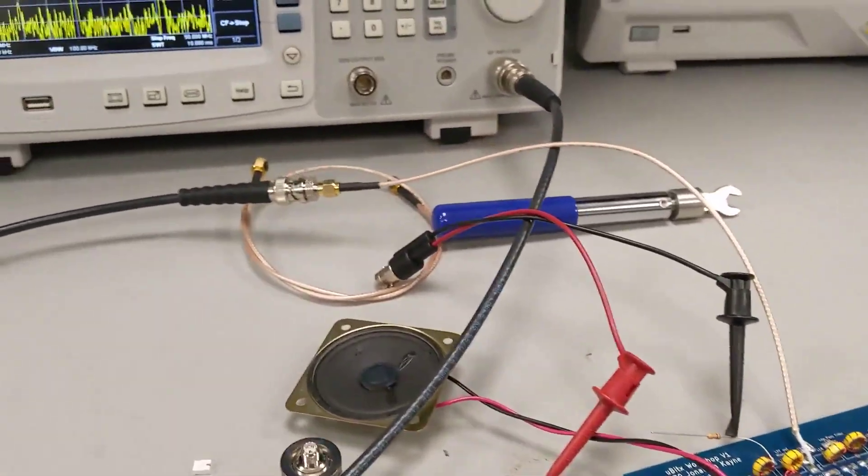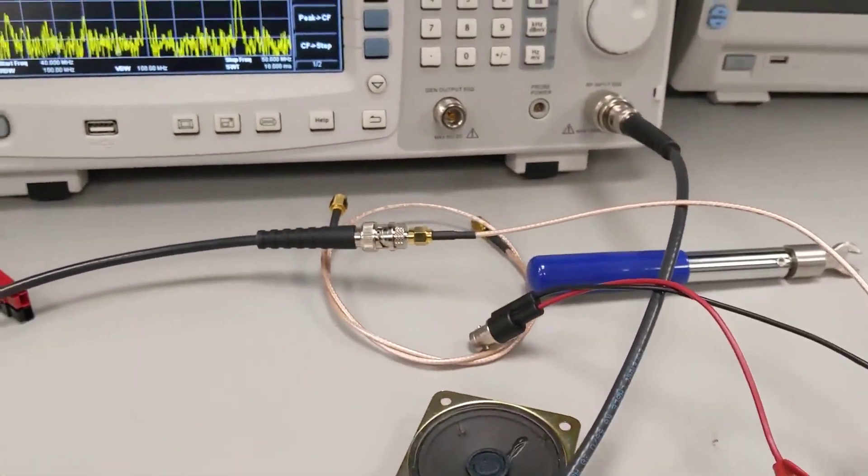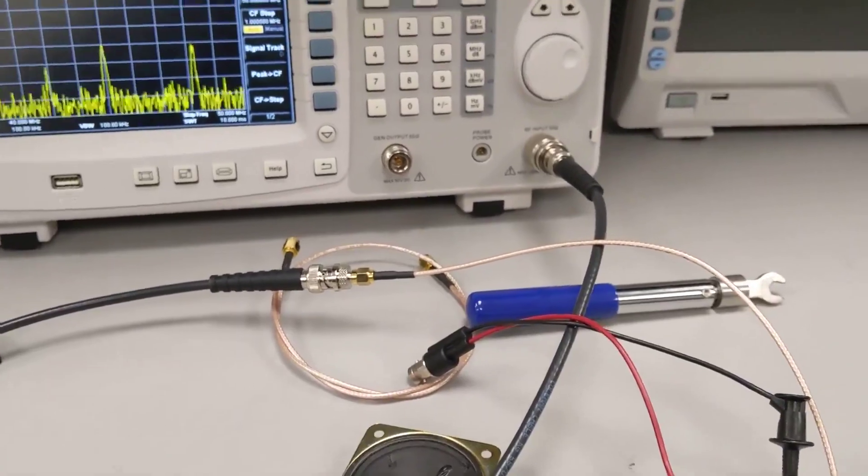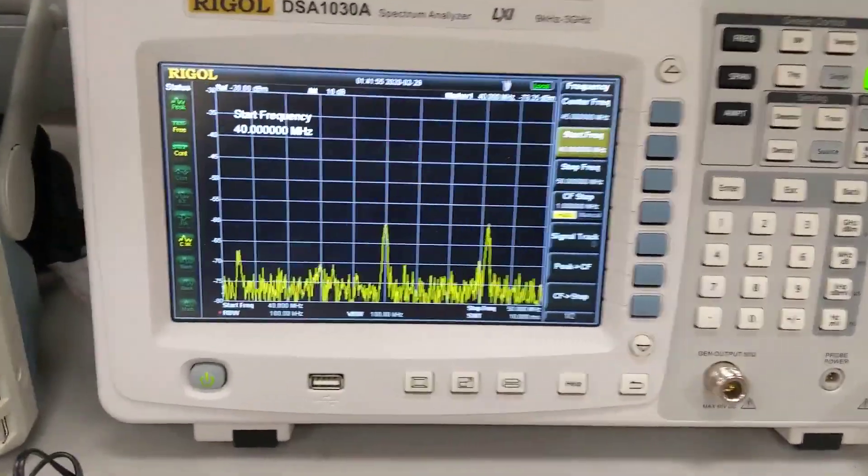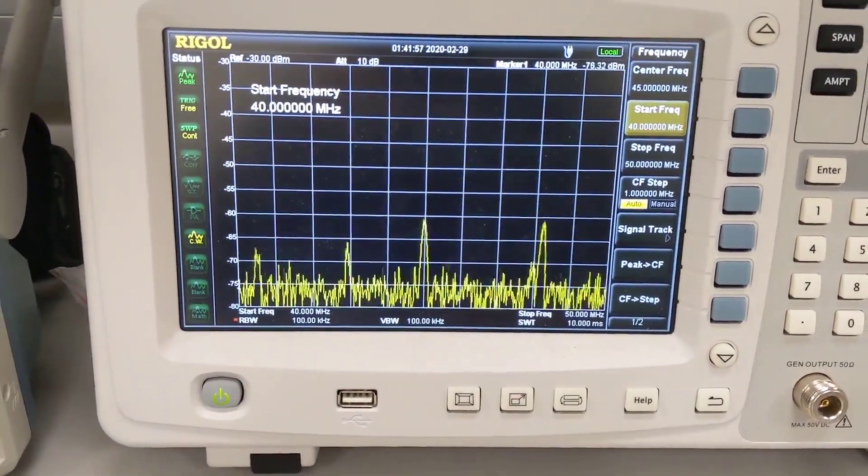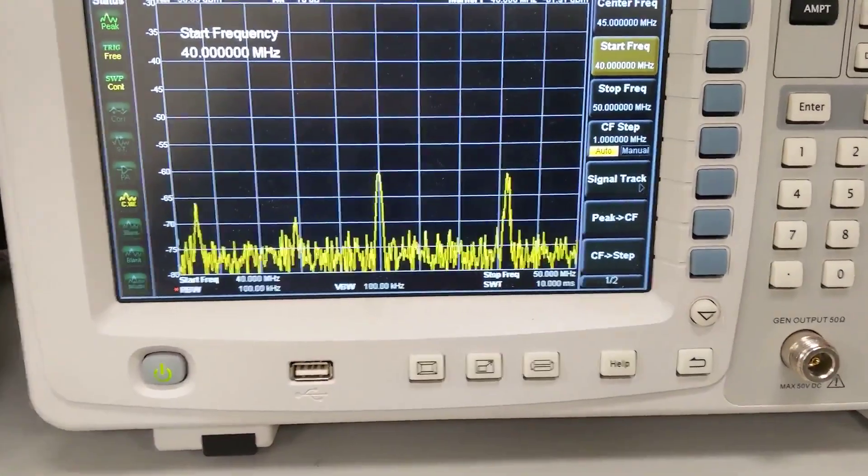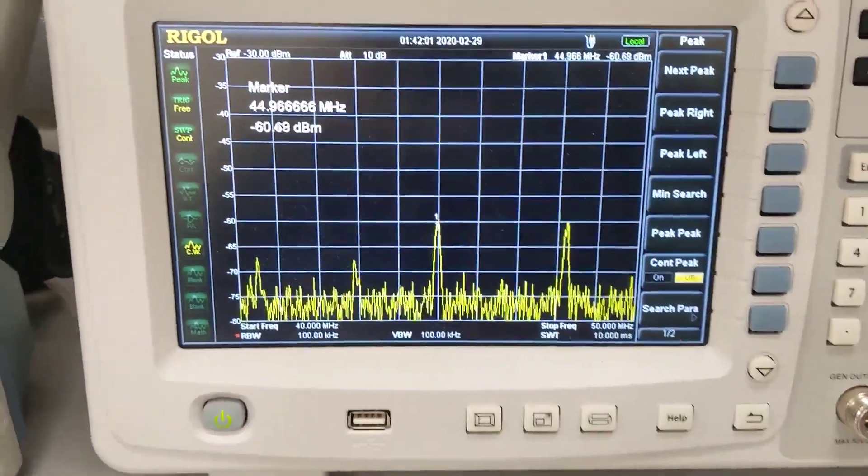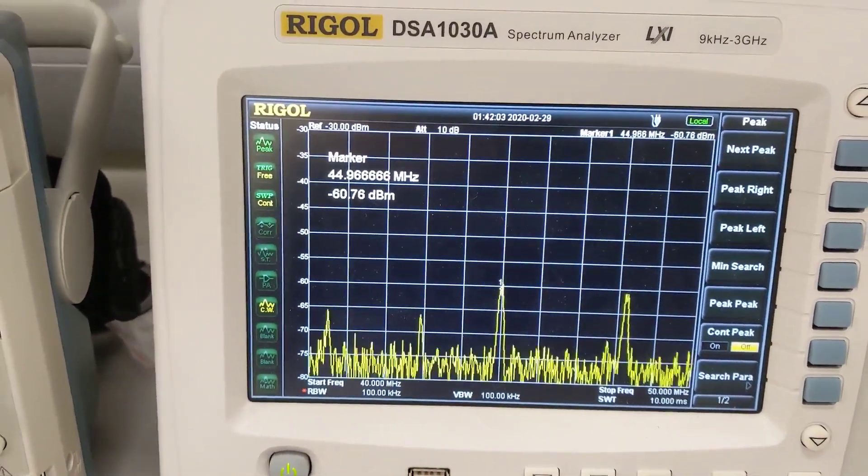Alright, so now I've re-hooked it up. I've just ran it through into the connector. And as we can see, that center one right there is right at 45 MHz. So if I add a peak detector, you can see it's right around 45 MHz.